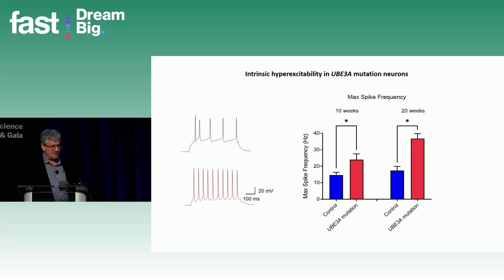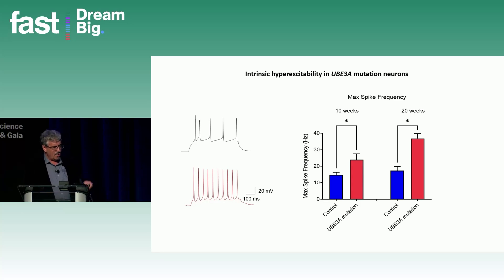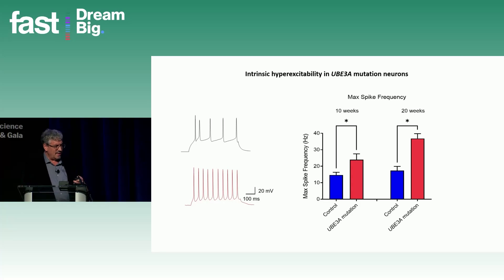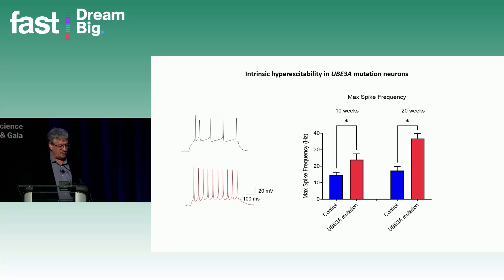Another phenotype we see is intrinsic hyperexcitability. By injecting different levels of current into the cell and monitoring action potential firing, we can measure maximum spike frequency. We see both early and later in development that the Angelman neurons are hyperexcitable — they fire more action potentials. They may be slightly less hyperexcitable than the deletion neurons, which we'll discuss later.